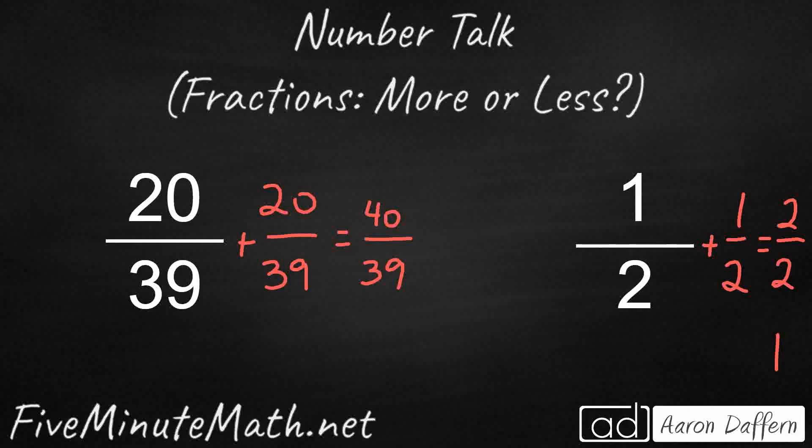So take a look at that. 40 39ths is going to be greater than 1 because we know that one whole, if we wanted to do that with a denominator of 39, would be 39 39ths, right? As long as you have the same numerator and denominator, it's equal to one whole. So my 40 39ths is going to be a little bit bigger than that.